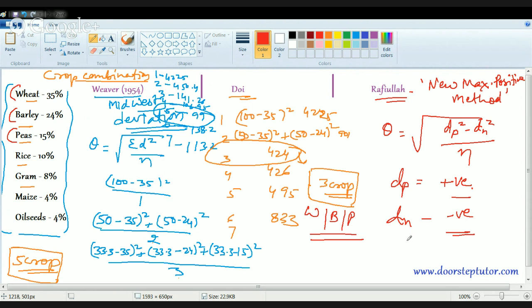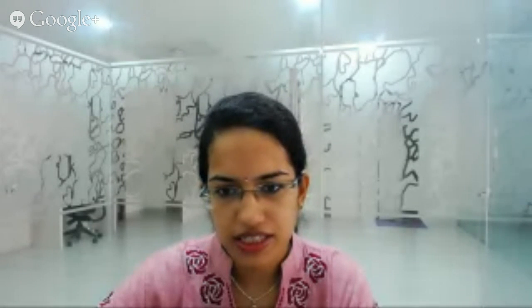We have addressed what crop combination is, the various ways of calculating it, and why it is important. We will now move on to the concept of diversification. A simple example helps understand diversification — look at this figure.